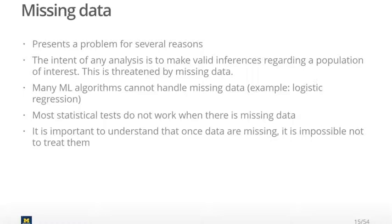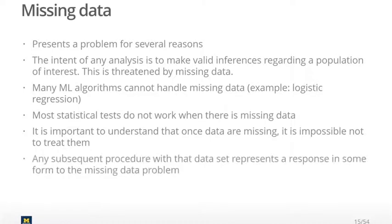So basically, once the data has gone missing, no matter what you do, you're introducing bias into the situation. And the only way to truly get rid of that bias would be to get that missing data back, which is not possible to do. So any subsequent procedure, anything that you do with a data set that has missing values in it, represents a response in some form to the missing data problem, even if that response is just throwing out certain rows or certain columns. It doesn't solve the problem, it's just one way of handling the situation.